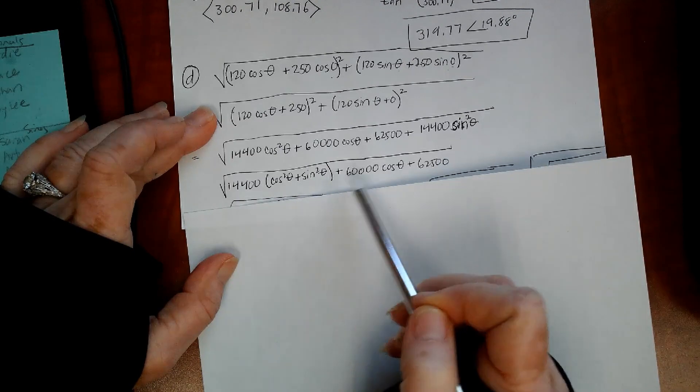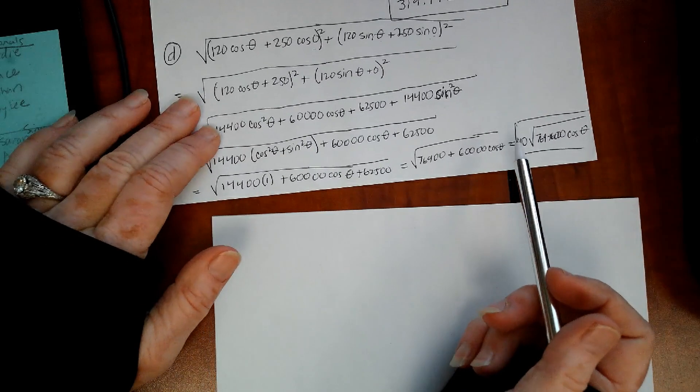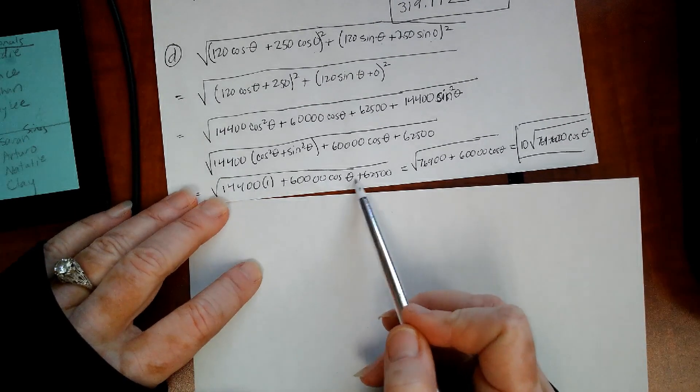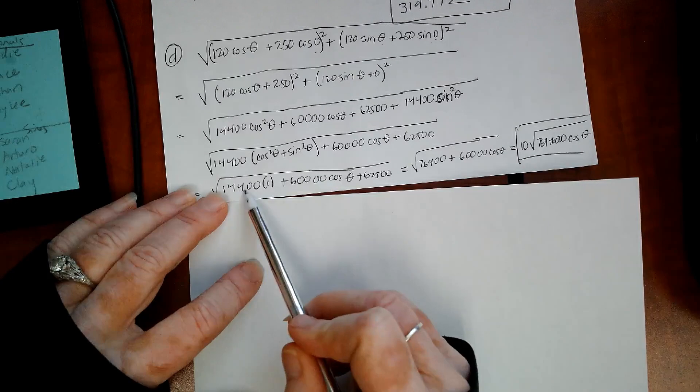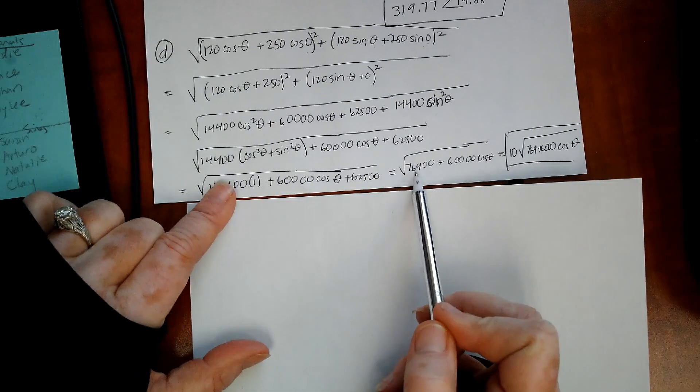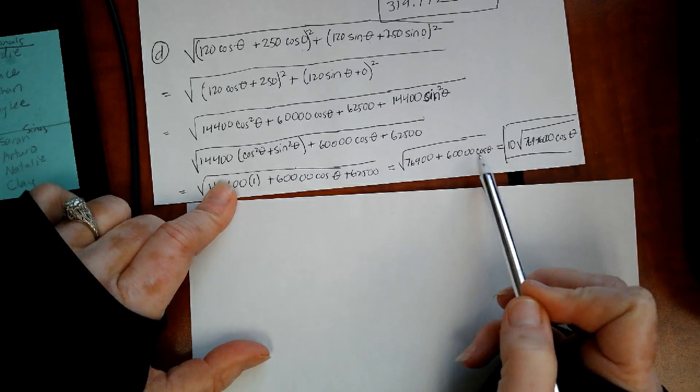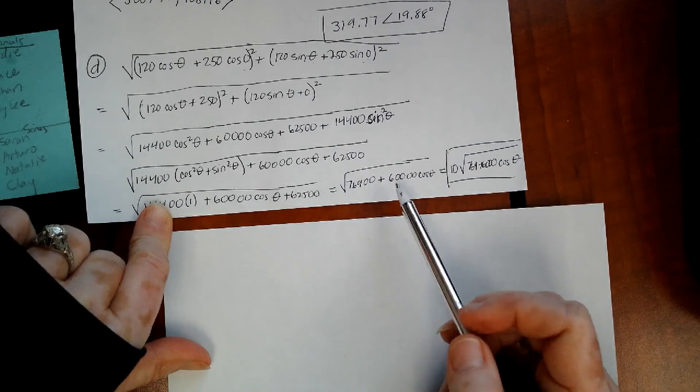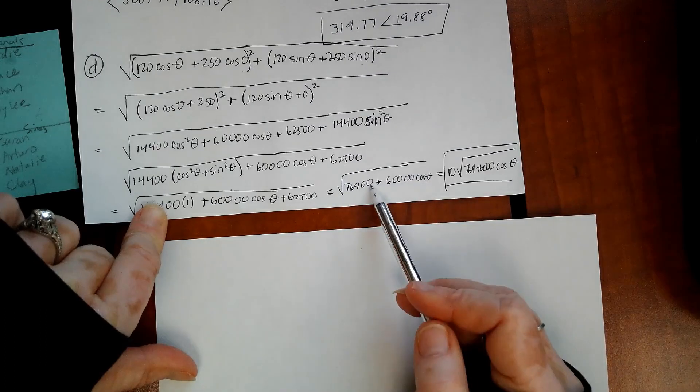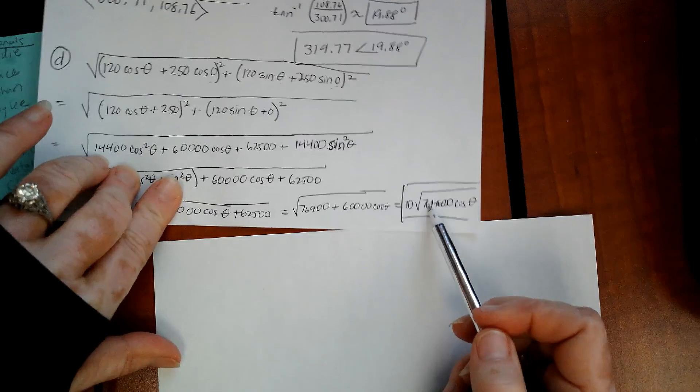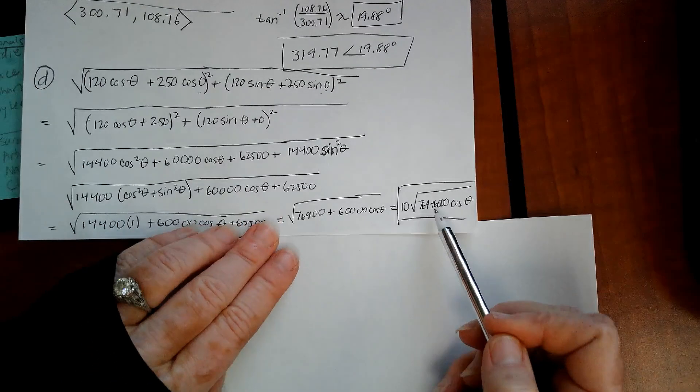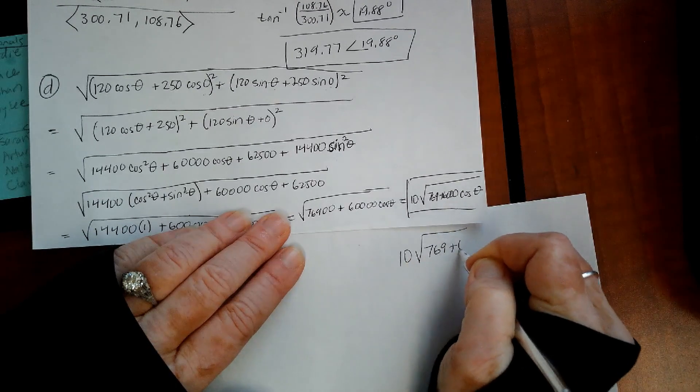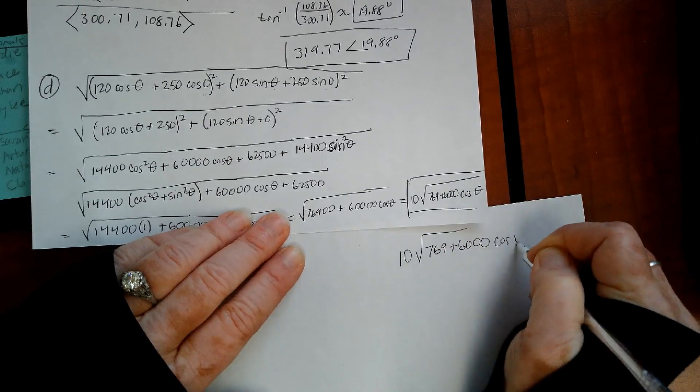Here is what we end up with. We combine the two constant terms, and we get this constant term here. We've still got this coefficient on the cosine theta. Then you can actually factor out a hundred, because see how they both have two zeros on it? So that comes out as a ten, and you end up with, it's hard to read, ten square root 769 plus 6000 cosine theta. That's what you end up with right there.